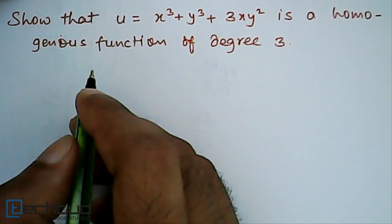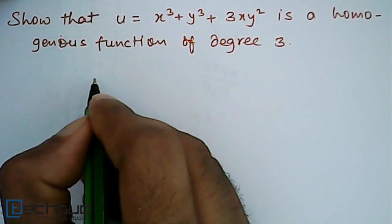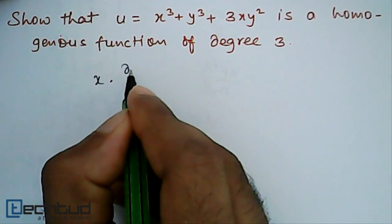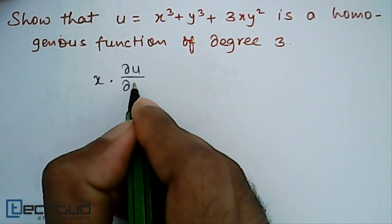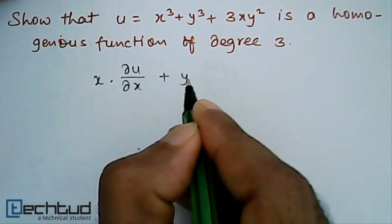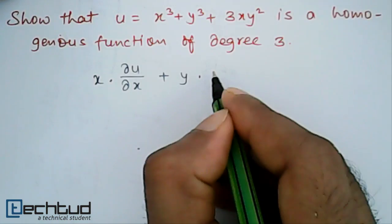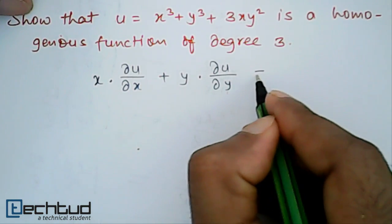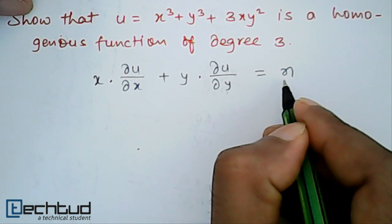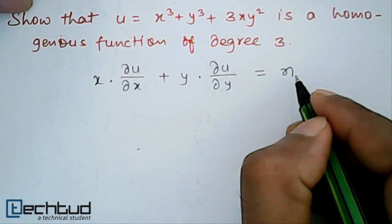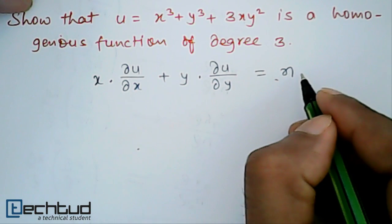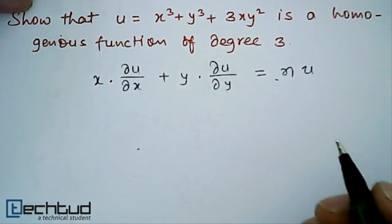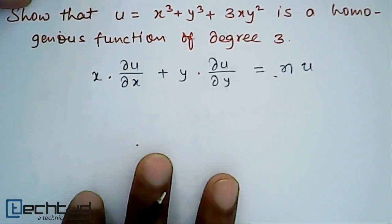So what is Euler's theorem? It states that x times the partial derivative of u with respect to x, plus y times the partial derivative of u with respect to y, equals n — the homogeneous degree — times the function u itself. Let's check it.